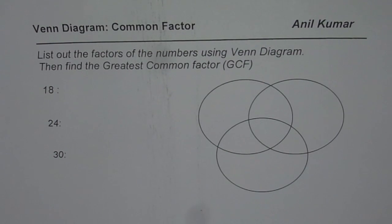I am Anil Kumar and here is a test question for my junior school students. You need to find common factors and then select the greatest common factors using Venn diagram for three numbers given to you. The numbers are 18, 24, and 30.